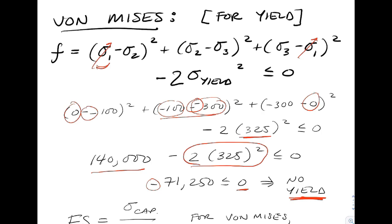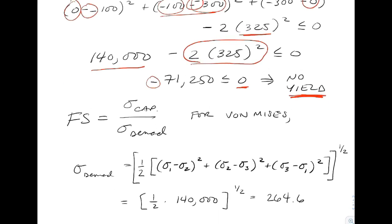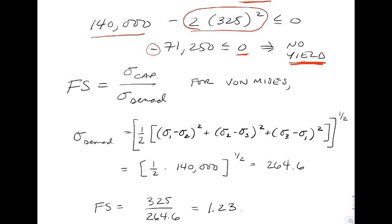Von Mises is more conservative than Tresca, and we found that there was no yielding with Tresca. The factor of safety is a little more involved for von Mises. Thinking of it in terms of the capacity divided by the demand, we have a little bit of work to do to find the demand.